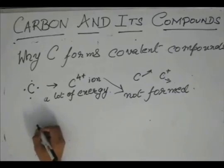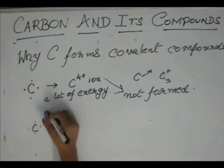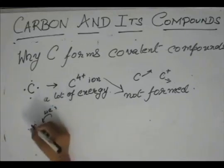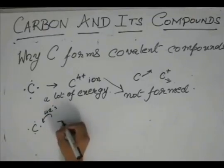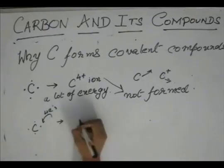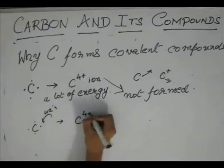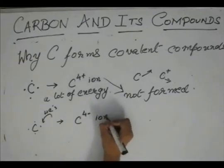Another way to form an electrovalent bond is taking up four electrons to make this eight. But taking up four electrons will give a C4- ion.